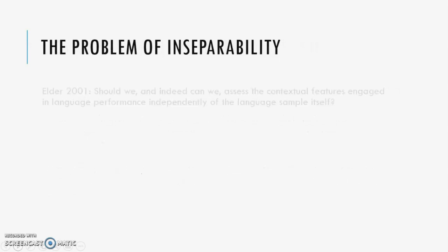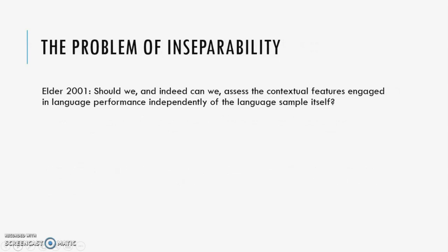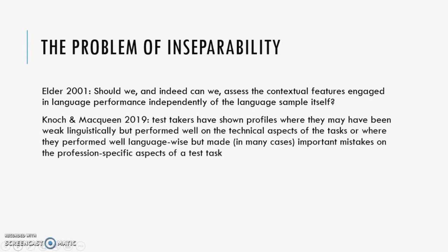Moving on to the problem of inseparability, Elder back in 2001 asked: should we, and indeed can we, assess the contextual features engaged in language performance independently of the language sample itself? More recently, Nock and McQueen said that test-takers have shown profiles where they may have been weak linguistically but performed well on the technical aspects of the tasks, or where they performed well language-wise but made important mistakes on the professional-specific aspects of a test task.